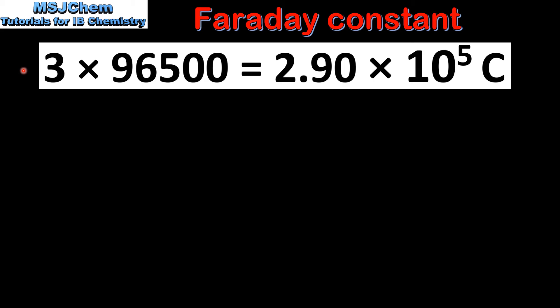Next we'll calculate the amount of charge required to form one mole of aluminium. In the previous slide we saw that to produce one mole of aluminium requires 3 moles of electrons. Therefore we multiply the Faraday constant by 3 and this gives us 2.90 times 10 to the 5 coulombs. This is the charge required to produce one mole of molten aluminium.